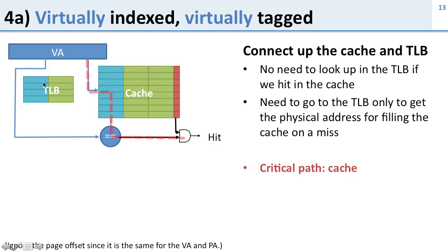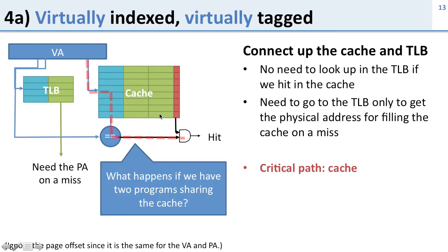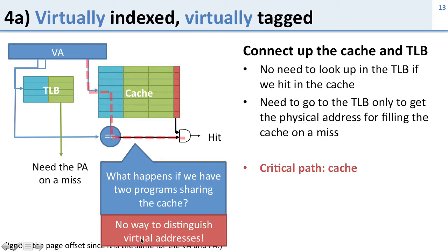We only need the TLB on a miss to get the physical address for DRAM. The problem: what happens if two programs share this cache? There's no way to distinguish virtual addresses. If two programs both access virtual address 1000, the cache can't tell which program it is. So the problem with VIVT is we can't run two programs sharing the cache — we'd have to flush it between programs or extend it to track which program each virtual address belongs to.